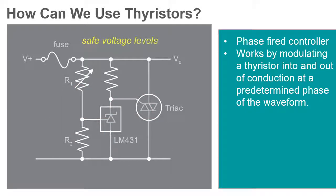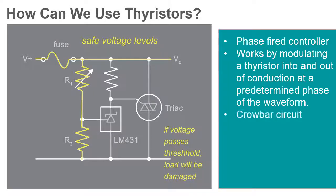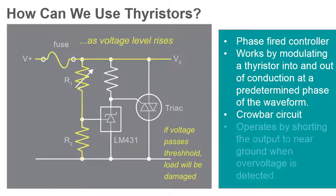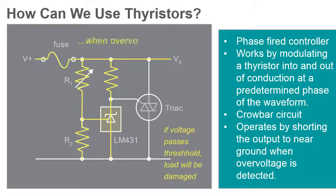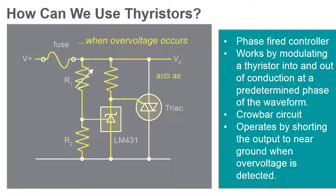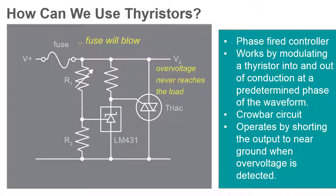Another very common thyristor circuit used to prevent over-voltage from damaging circuits is called a crowbar circuit. The crowbar circuit operates by putting a short circuit across the voltage output when triggered by an over-voltage condition. This drops the voltage to a safe level and protects any circuits or connected equipment from the excessive voltage. This type of protection circuit is often employed by lab or benchtop power supplies to protect the equipment attached to them.